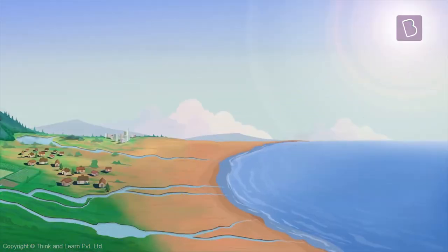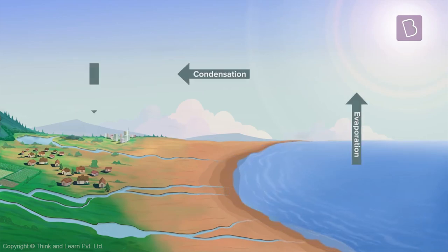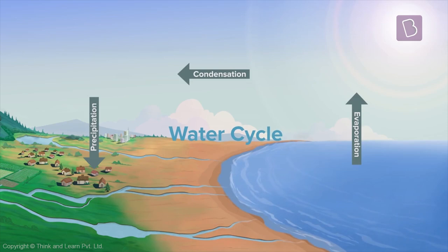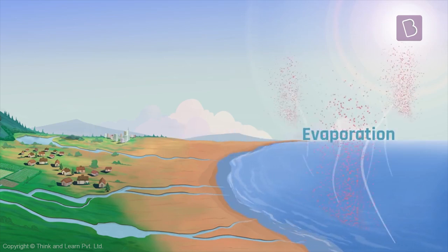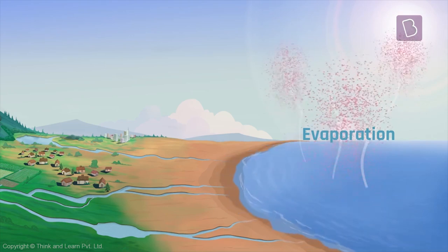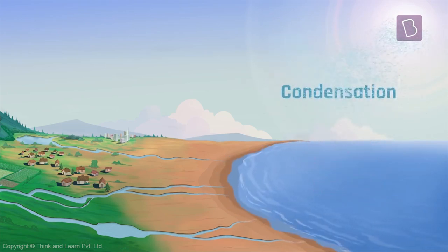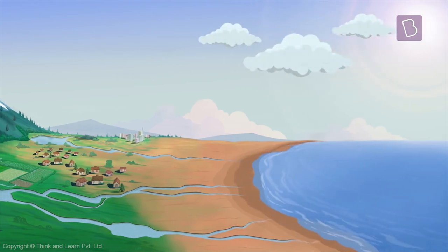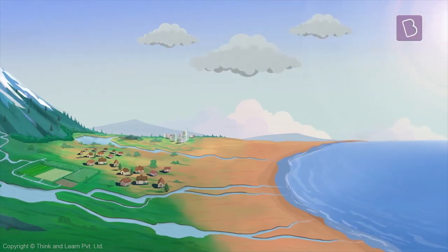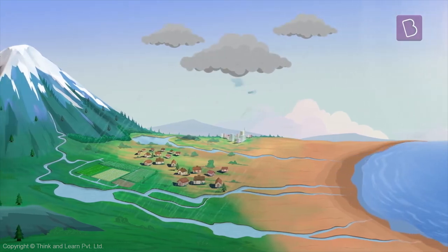So the journey of water that we just saw is what we call the water cycle. Evaporation puts the water molecules into the sky. Condensation brings the molecules together forming clouds. And finally, they come back down in the form of precipitation.